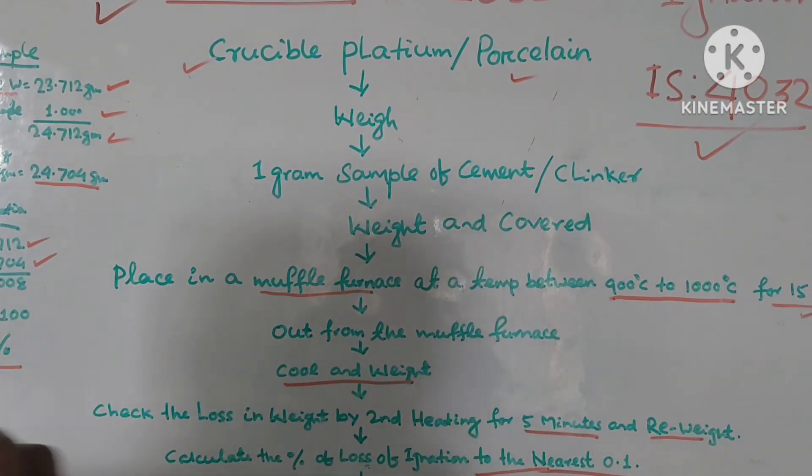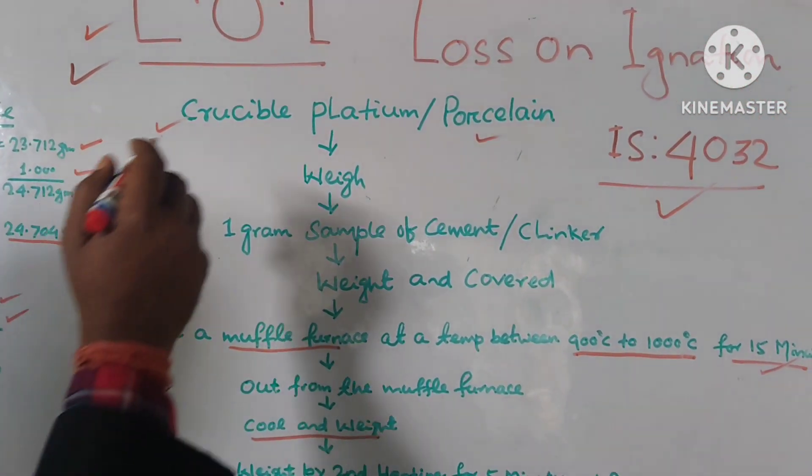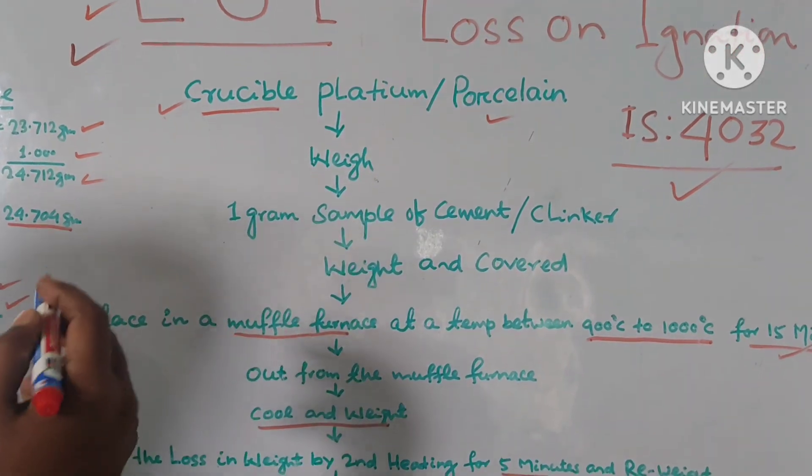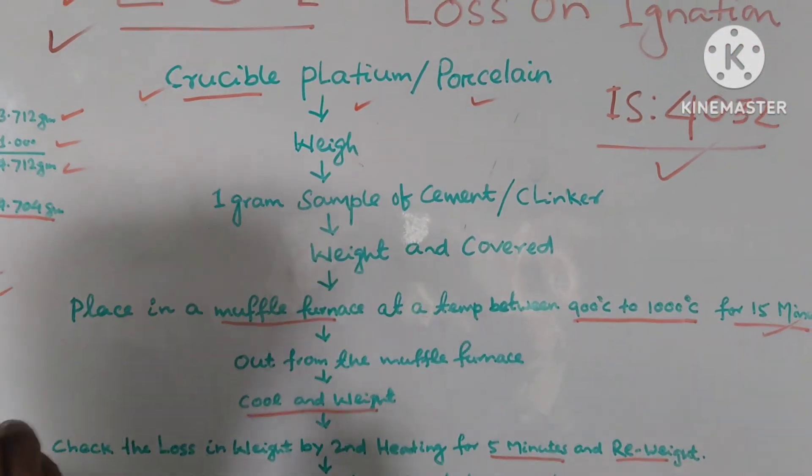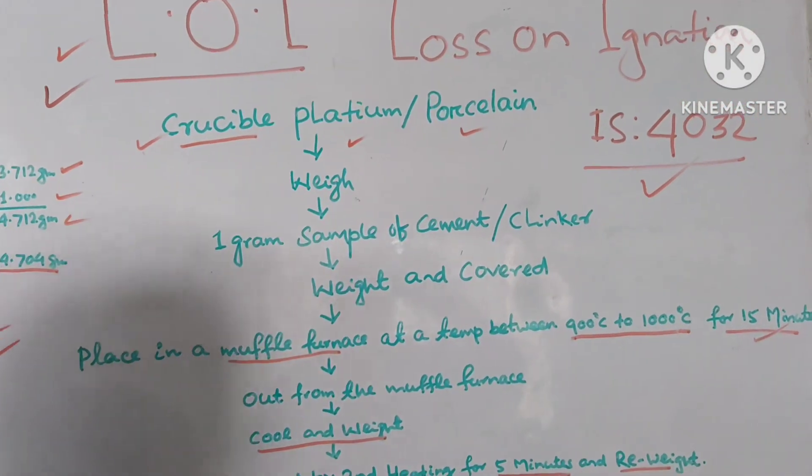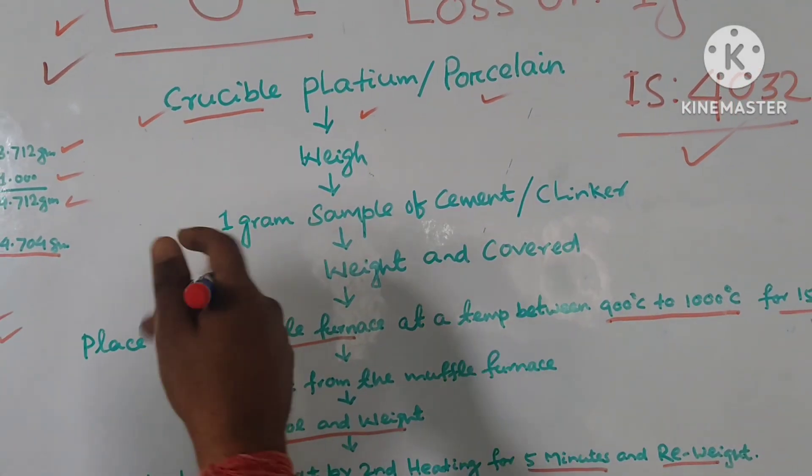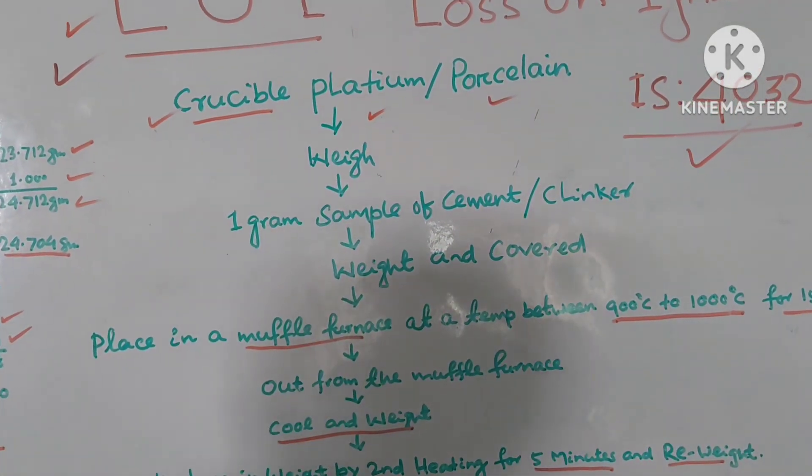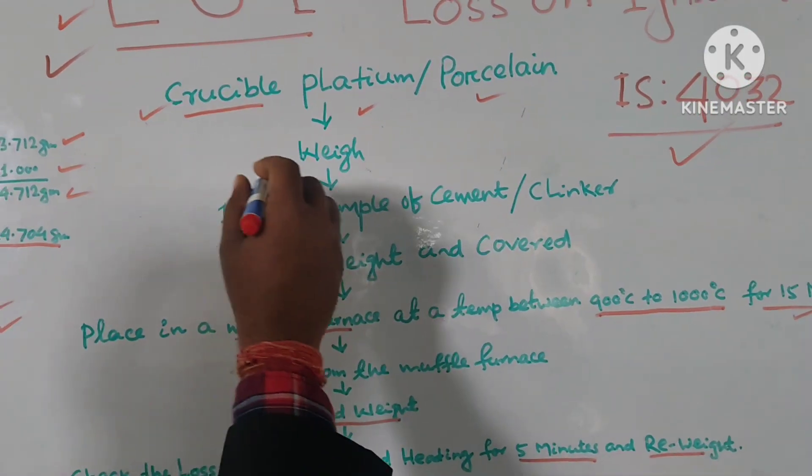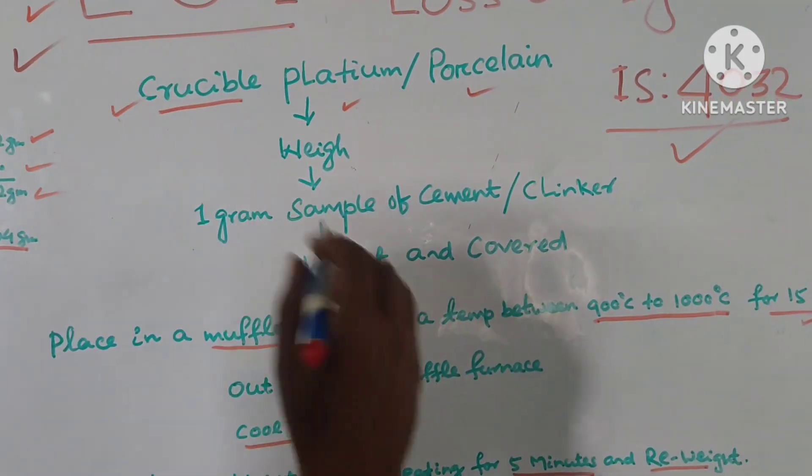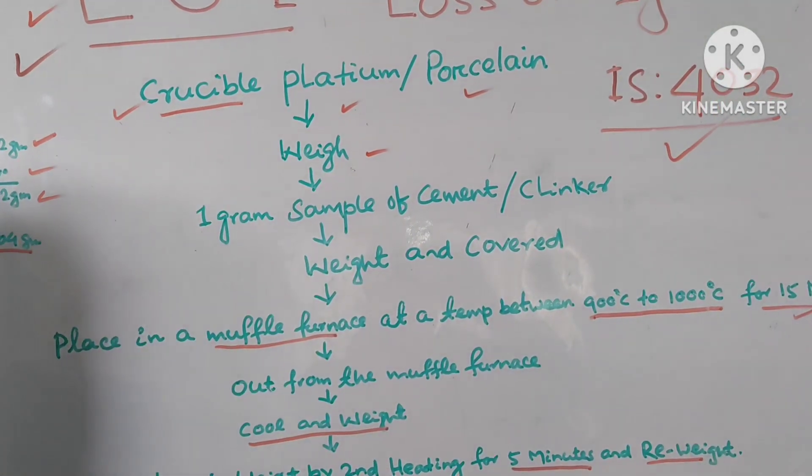So loss ignition, how we test step by step. We are going to starting. First, what to do? First, we have to weigh the crucible. You can take the crucible, you can take the platinum crucible. If platinum crucible is not available, you know, platinum crucible is a very high cost. So crucible, porcelain crucible also, it's okay. No tension, we can take. So first, take a crucible and weigh the crucible.